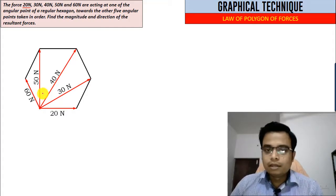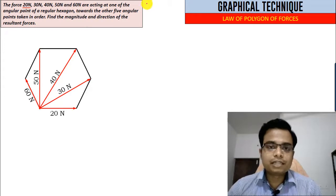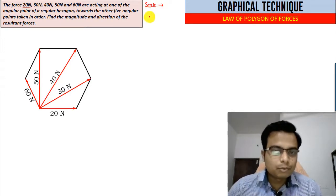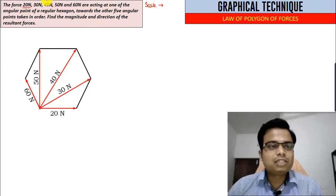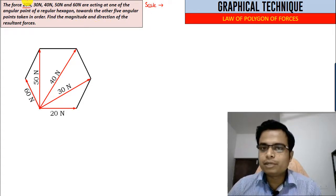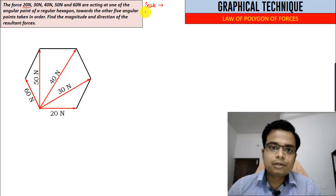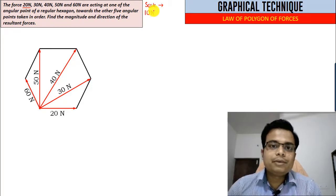This is going to be very simple. The first thing that we need to do is take a scale. The most convenient scale would be 20 Newton equals 2 centimeters, and in that sense, 10 Newton is equivalent to 1 centimeter.